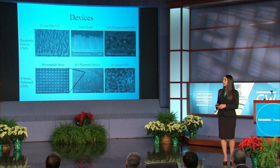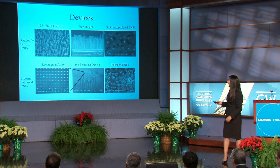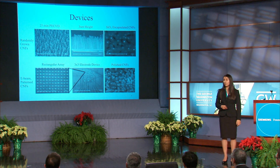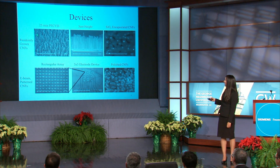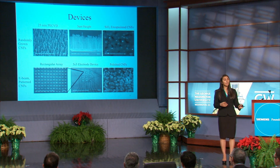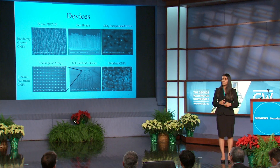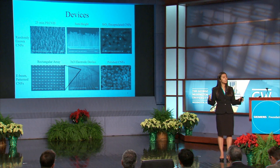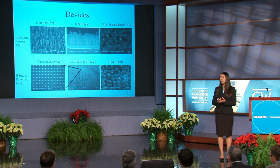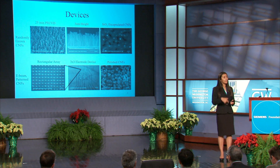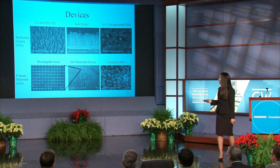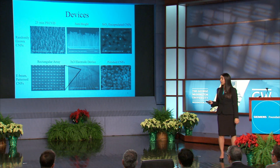The two devices are in these two configurations: the randomly grown carbon nanofibers and the patterned carbon nanofibers. The randomly grown fibers are shown here on the top left. I've grown them using Plasma Enhanced Chemical Vapor Deposition, or PECVD, which is essentially a large tank in which I put a silicon wafer, shoot in ammonia and acetylene gas with a series of heating and cooling, which will grow these fibers in about 25 minutes. These fibers are approximately 3 microns in height.